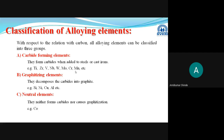Graphitizing elements: when certain elements are added to steel, they break or decompose the carbides already present and separate the carbon in the form of graphite. Graphite is simply a form of carbon. These elements are termed graphitizing elements — they decompose the existing carbides and separate out the carbon as graphite. Examples include silicon, nickel, copper, and aluminium.